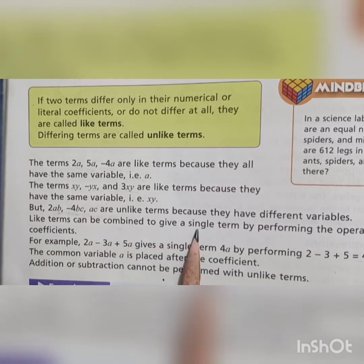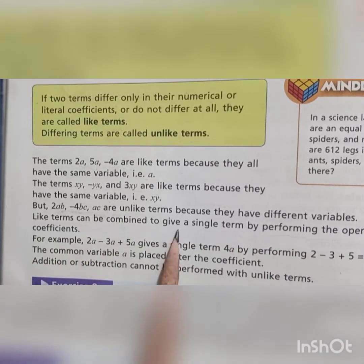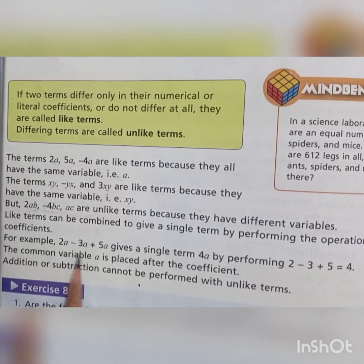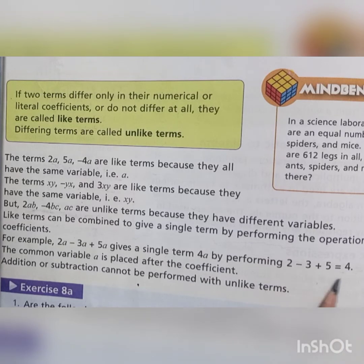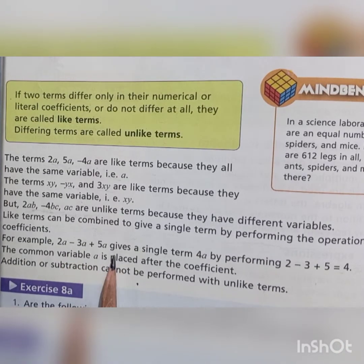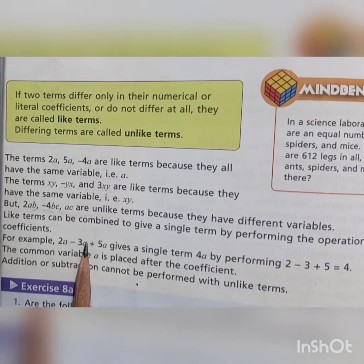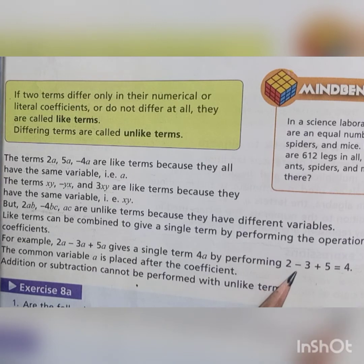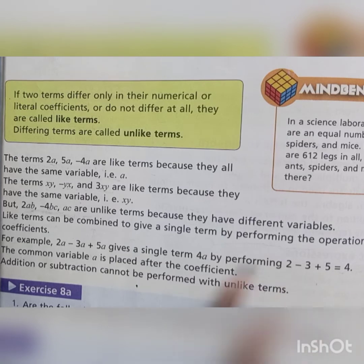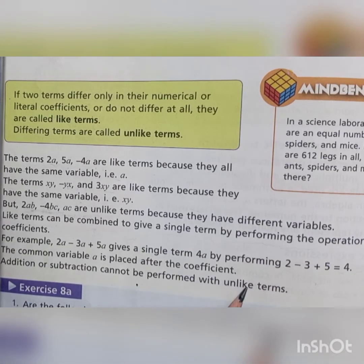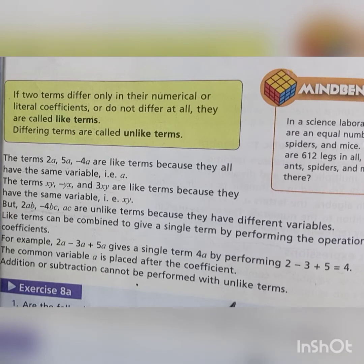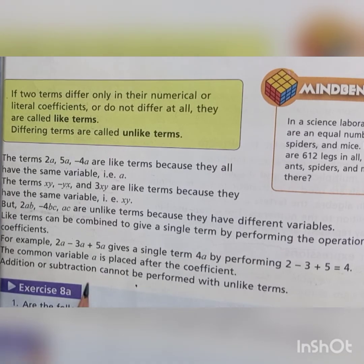On the other hand, 2ab, −4bc, and ac are unlike terms because they have different variables. Like terms can be combined to give a single term by performing the operations on the coefficients. For example, 2a − 3a + 5a gives a single term: (2 − 3 + 5)a = 4a. The common variable a is placed after the coefficient. Addition or subtraction cannot be performed with unlike terms because their variables are different.